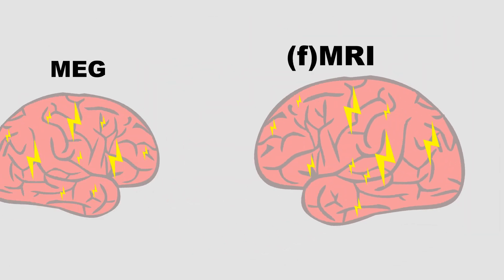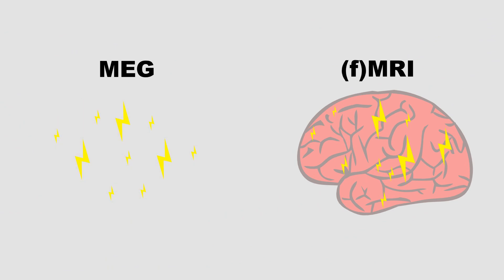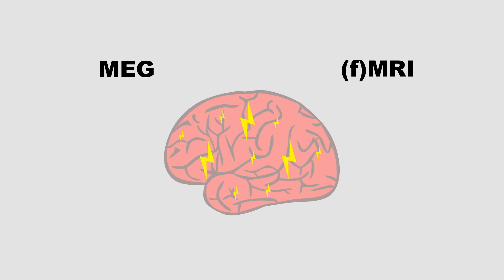It's important to keep in mind though that MEG doesn't show the physical structure of the brain, just its activity, so MEG scans are often combined with MRI scans so we can see both together.